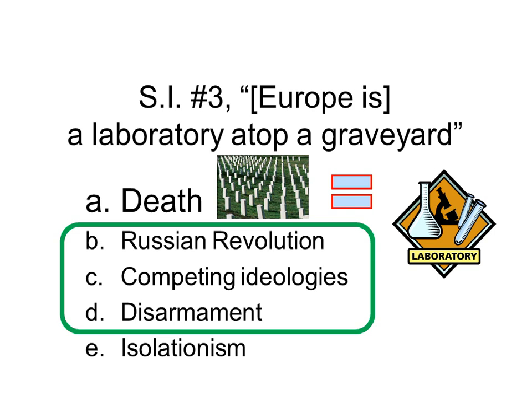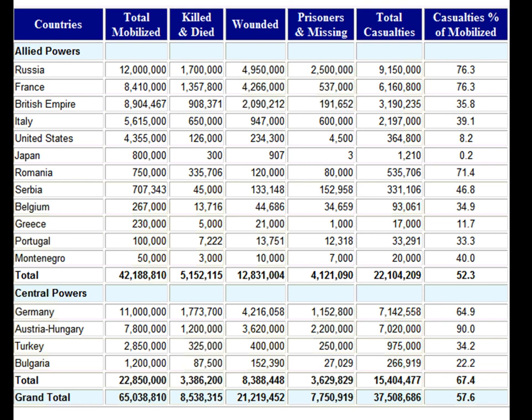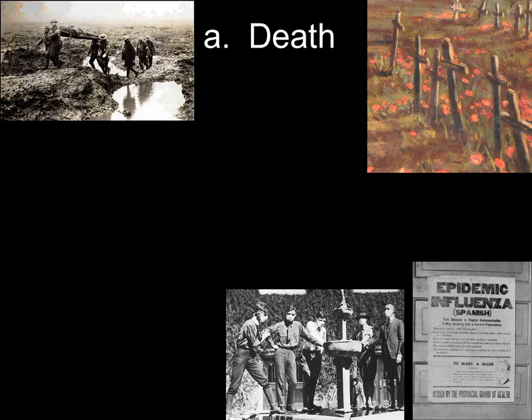Because of what I'm calling the 'death effect,' there's going to be experimentation between World War One and World War Two with different ideologies, and it's going to be this clash of ideologies that will be part of the cause of World War Two. This chart, reused from the World War One unit, shows some statistical facts — the grand total killed in World War One was over 8.5 million, and wounded over 21 million.